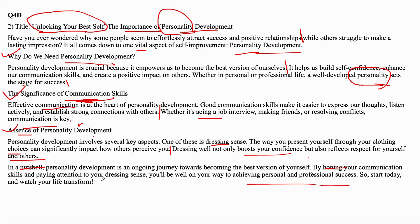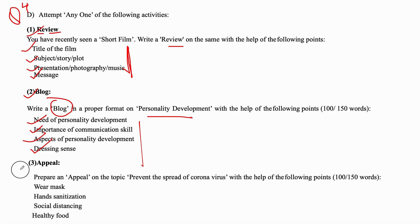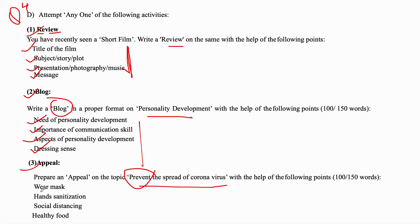Start today and watch your life transform. That brings question 4D second to an end. Now we will quickly move to question 4D third — an appeal. Appeal means request. Prepare an appeal on the topic: prevent the spread of coronavirus, with the help of the following points: wear mask, hand sanitization, social distancing, and healthy food.